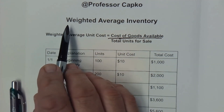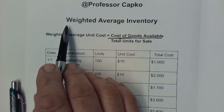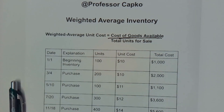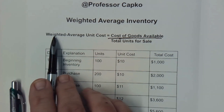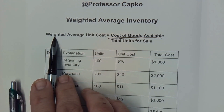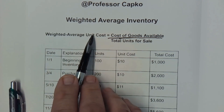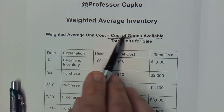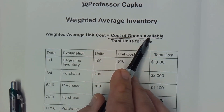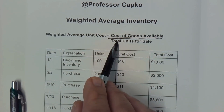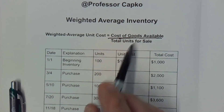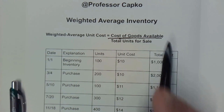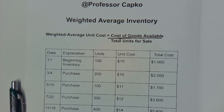Today we're going to calculate the cost of goods sold using the weighted average inventory method. The way to calculate the weighted average inventory cost is we take the cost of the goods available and divide it by the total units for sale — so the total cost of units available for sale divided by the total units for sale.